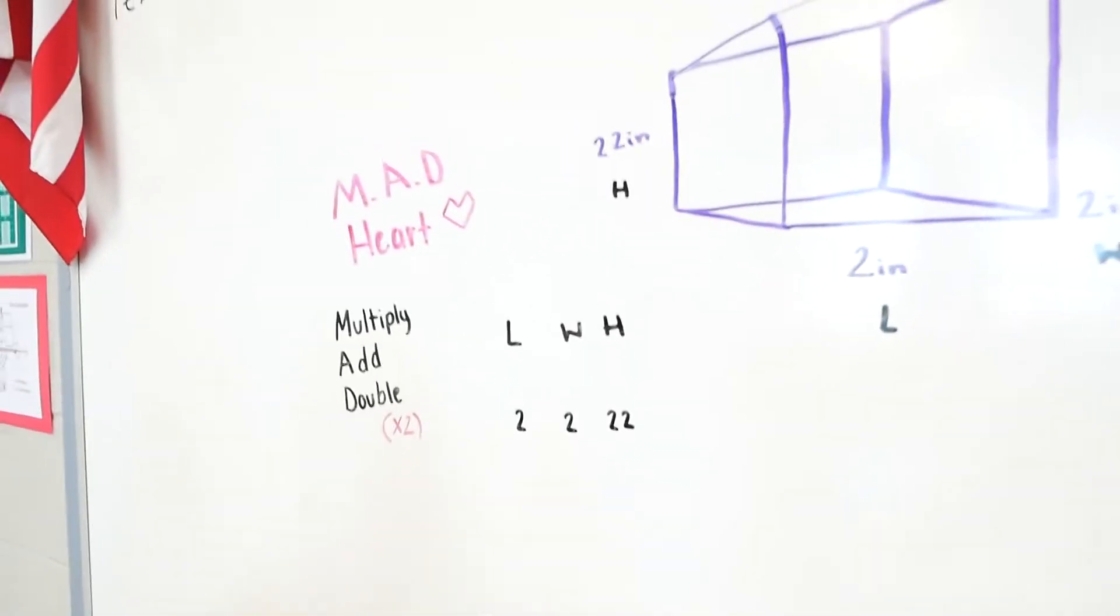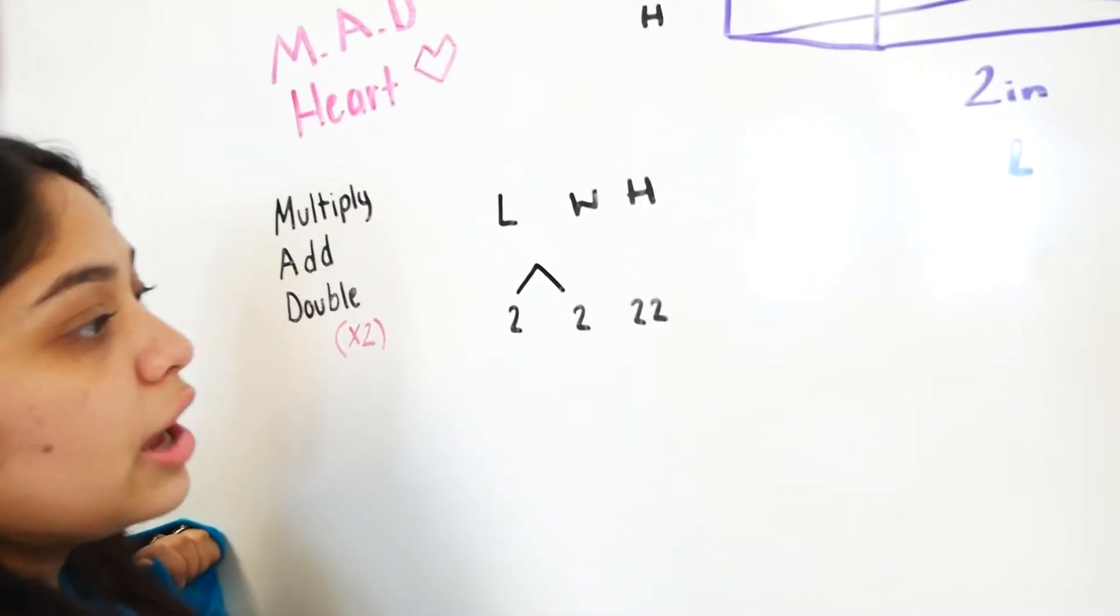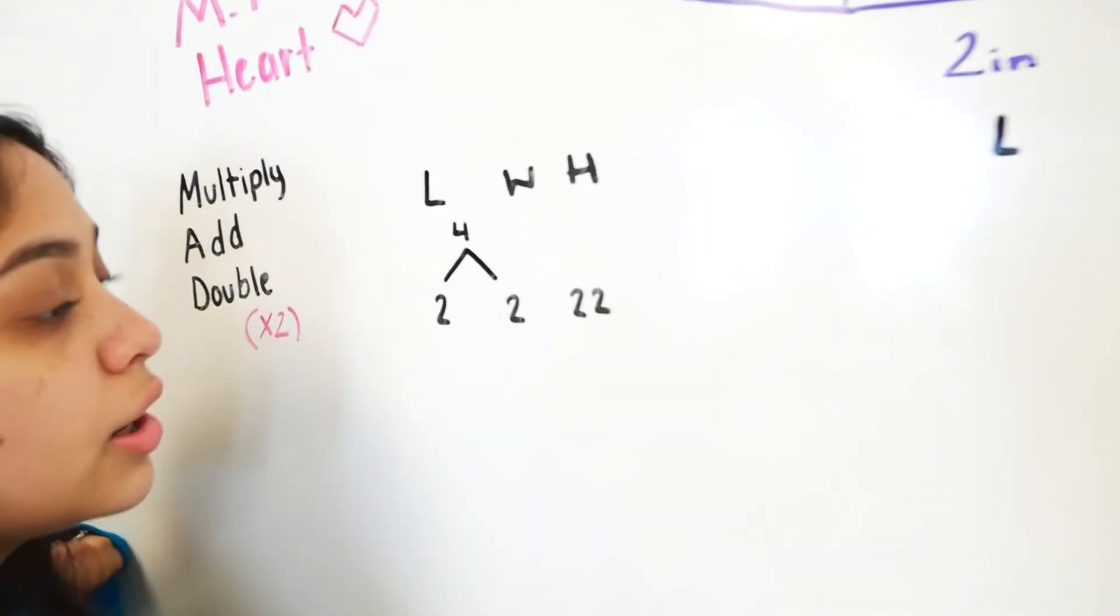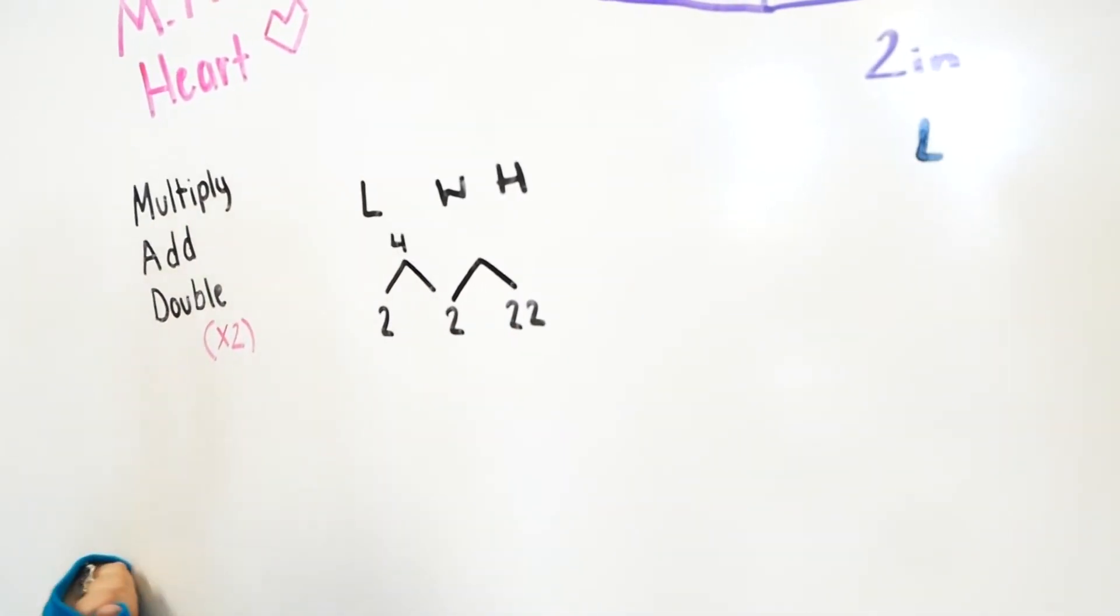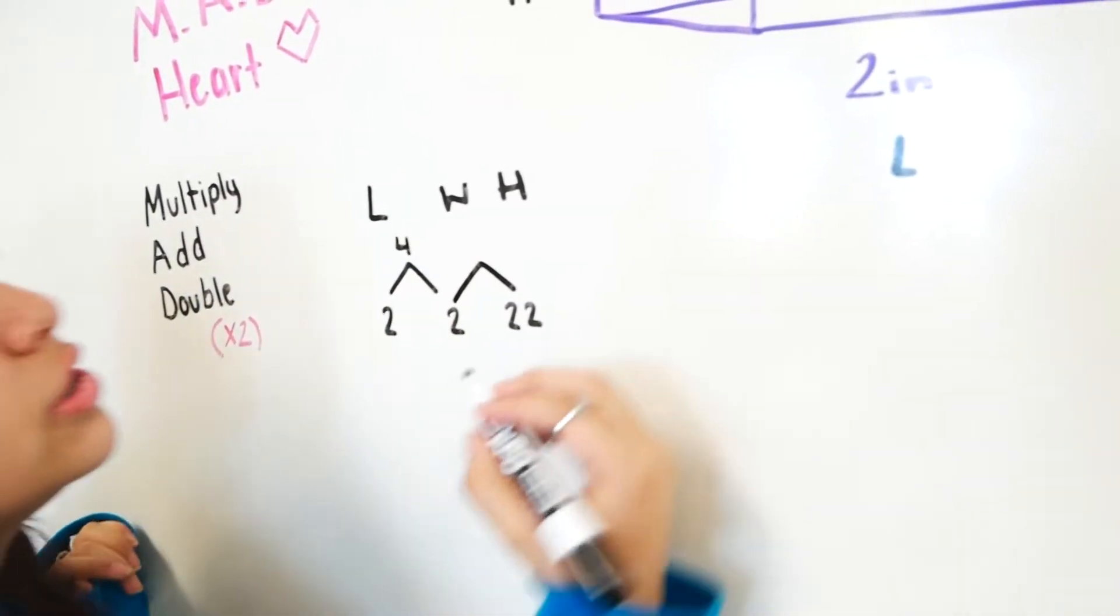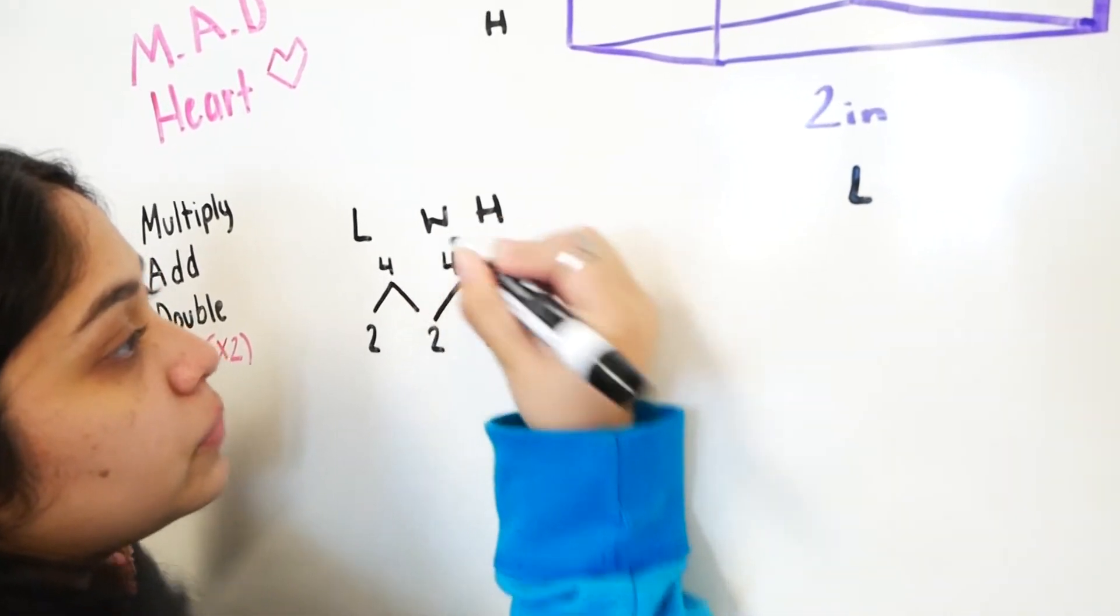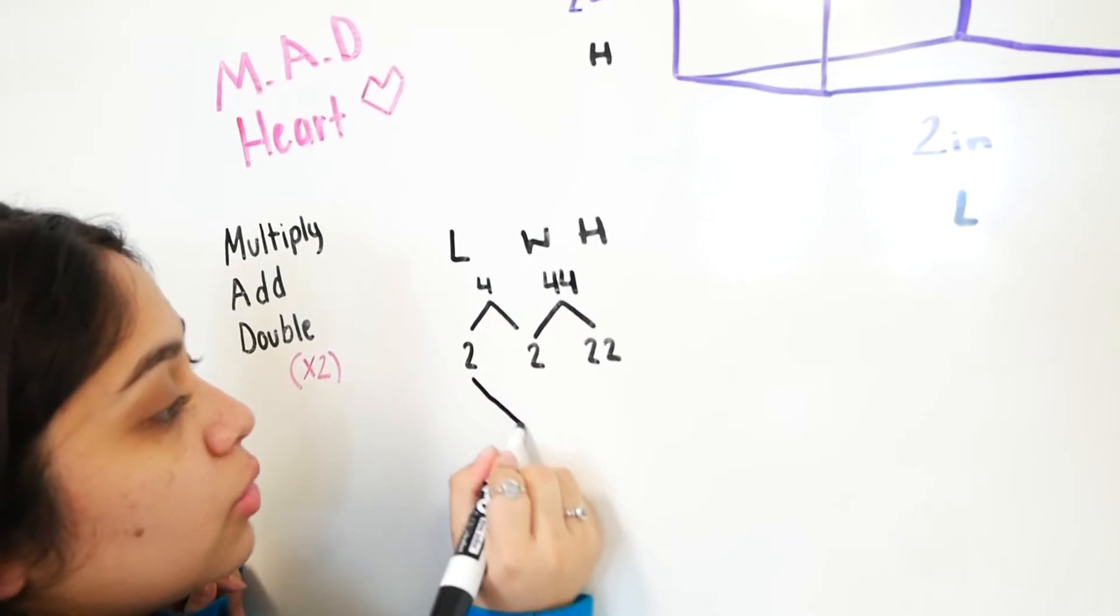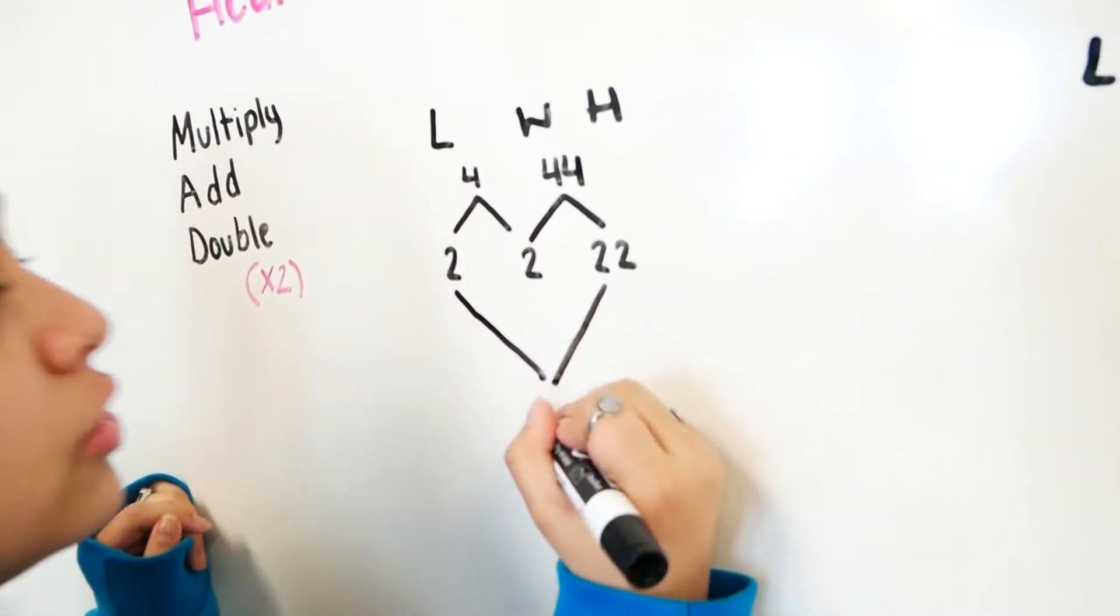Now this is where it's going to slowly start to look like a heart. You're going to take these two and multiply them. 2 times 2 is 4. Now you're going to do 2 and 22. 2 times 22 is 44. Now you're going to take your 2 outside and multiply them which is 44.